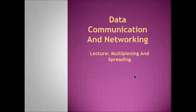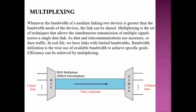Multiplexing is basically about spreading a channel into multiple components that can carry data and reach many users without difficulties. Whenever the bandwidth of the medium linking two devices is greater than the bandwidth needs of the device, the link can be shared. Instead of using dedicated lines, the principle of multiplexing can be used because it promotes sharing of the media.